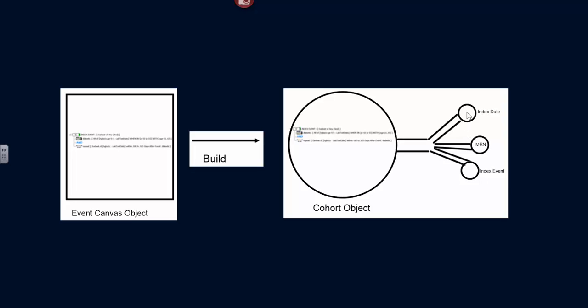That is, the surface has the representation of each of the individual members. And a member of this cohort has an index state, has a medical record number, and has the index event that is associated with that index state.